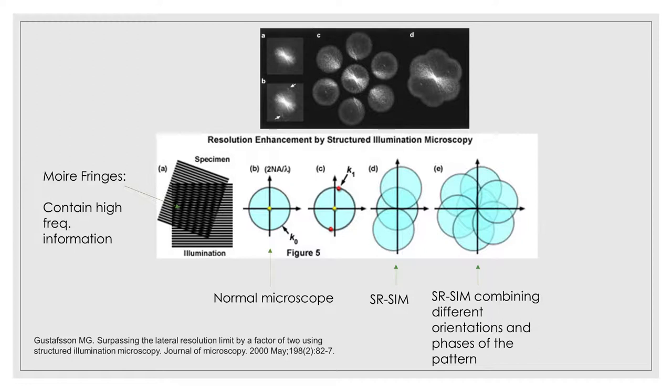To obtain all of this information, we need to take a series of images with the pattern at different phases and different angles. And this results in seven sets of components, as you can see in the image. These will then be computationally separated and recombined at their proper positions. And since the new reconstruction contains information from twice as far out, it's able to double the resolution. After reconstruction, the data is inverse Fourier transformed to produce the super-resolution image.